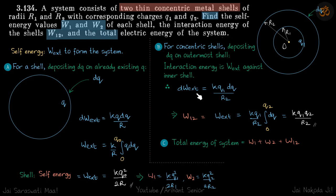So dW external to bring this dQ charge is potential at this point times dQ. Potential at this point is kQ1 by R2. So kQ1 by R2 times dQ. This is the work external.